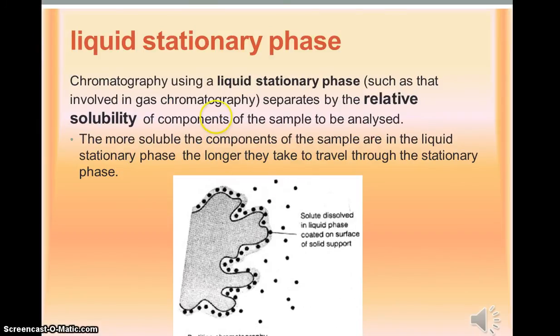If you have a liquid stationary phase, and that's in gas-liquid chromatography, then basically a thin layer of liquid coats the inside of the column, and the components of the mixture dissolve in that liquid layer. The more soluble they are, the more they'll dissolve, and the more they'll get held back by the stationary phase, so they'll take longer to come through the column.